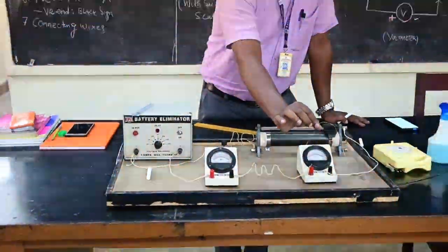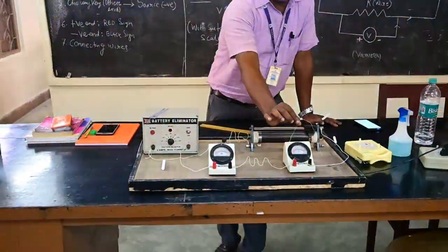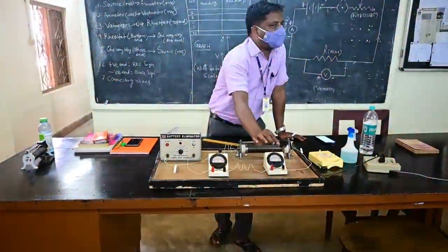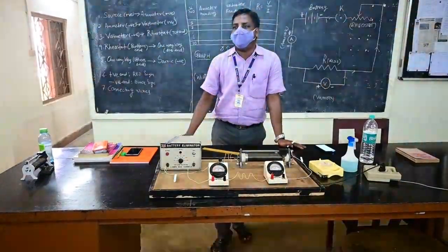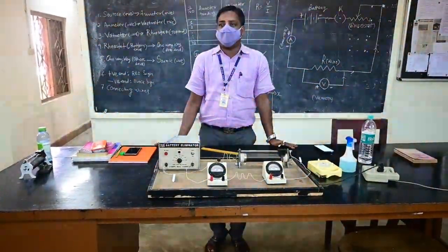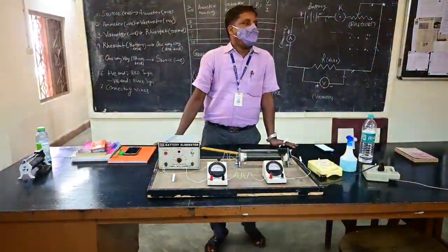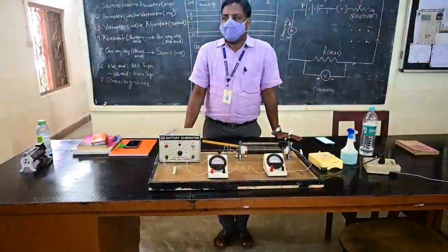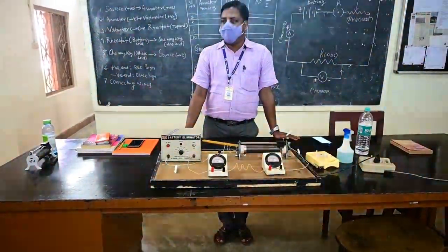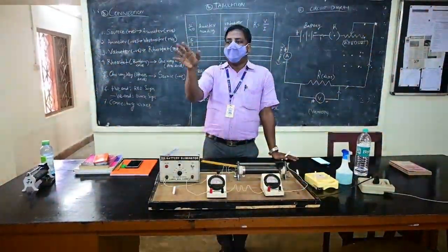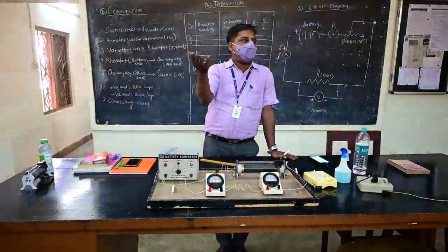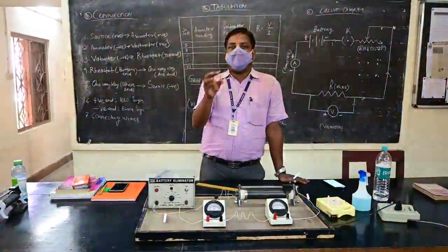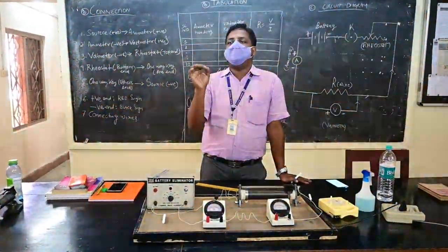For this experiment, you need to have a V versus I graph. As per Ohm's law, the potential difference across any conductor is directly proportional to the current passing through it, provided certain conditions hold — such as temperature being constant and no mechanical strain. The V versus I graph for Ohmic conductors is generally a straight line.